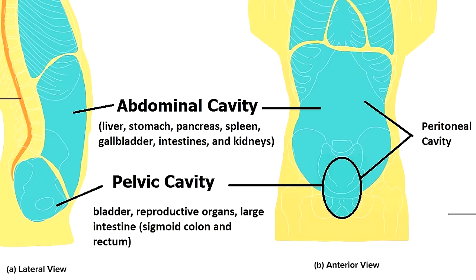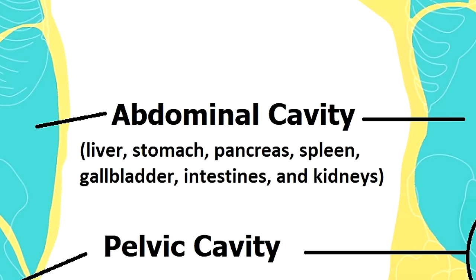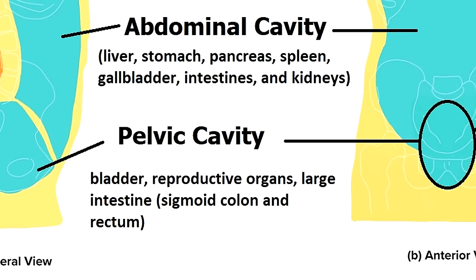The abdominal cavity contains organs such as the liver, stomach, pancreas, spleen, gallbladder, intestines, and kidneys. The pelvic cavity contains the bladder, reproductive organs, and the distal portions of the large intestine such as the sigmoid colon and rectum.